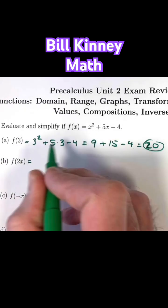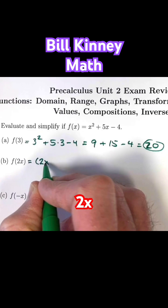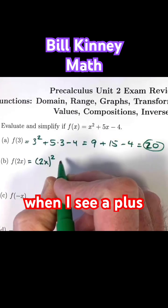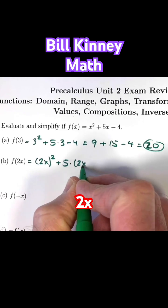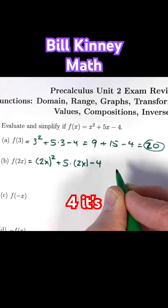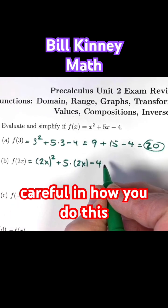So when I see an x squared, I need to do 2x quantity squared. When I see a plus 5x, I need to do 5 times the quantity, 2x, then subtract 4. You need to be very careful in how you do this.